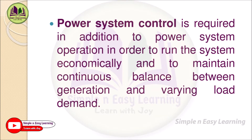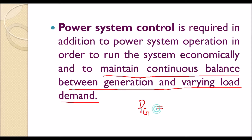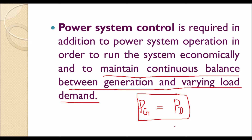Maintaining constant frequency and voltage improves power factor and is a basic requirement of a good power system. Power system control is required in addition to operation in order to run the system economically and to maintain continuous balance between generation and varying load demand. The key equation is: generated power (PG) equals power demand (PD). We need to match generation to demand — if 100 megawatts is demanded, we generate 100 megawatts, accounting for losses, and excess power can be transferred to other areas.